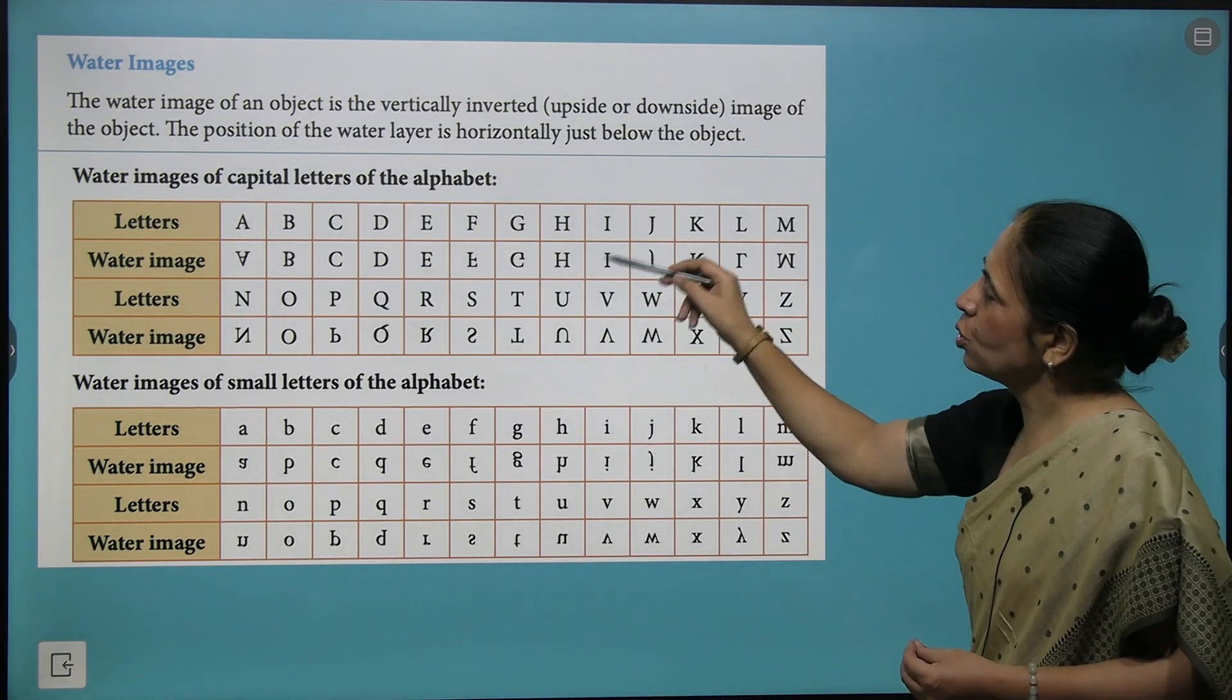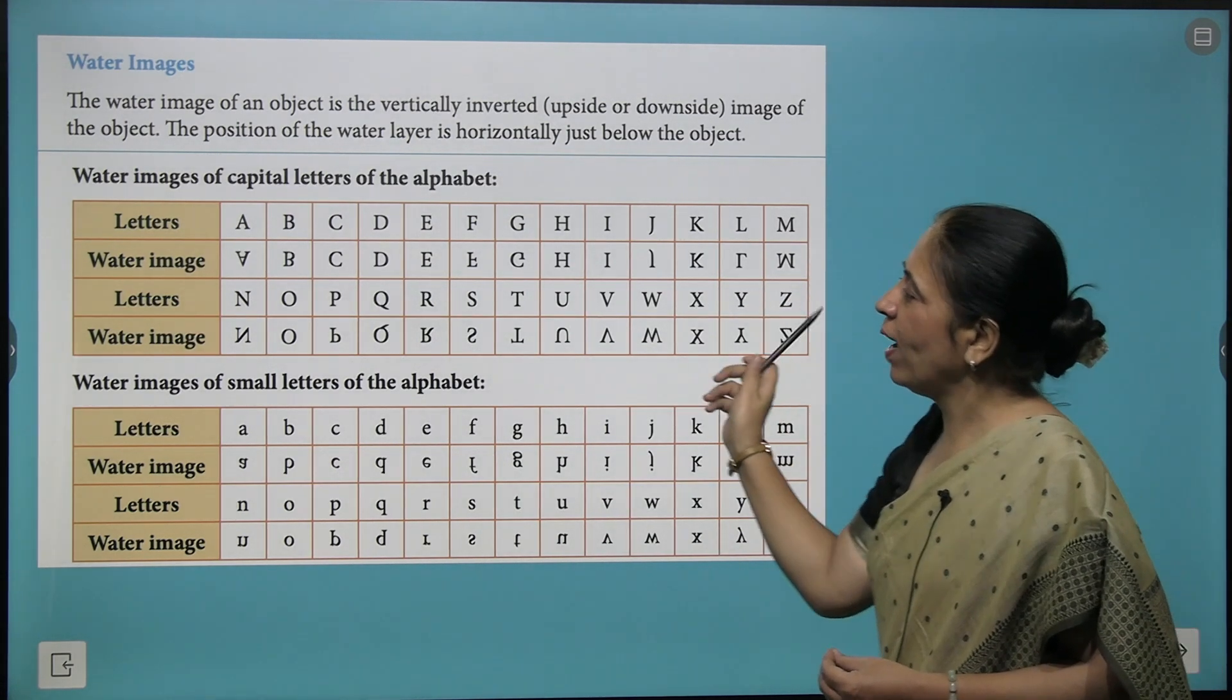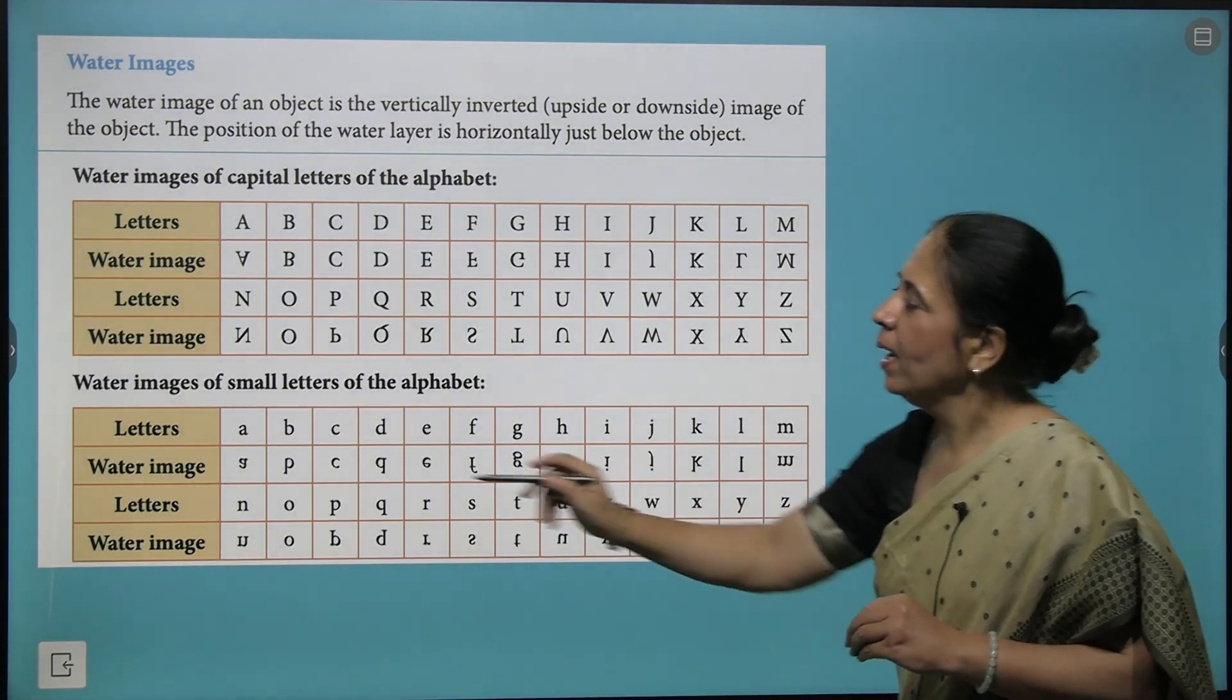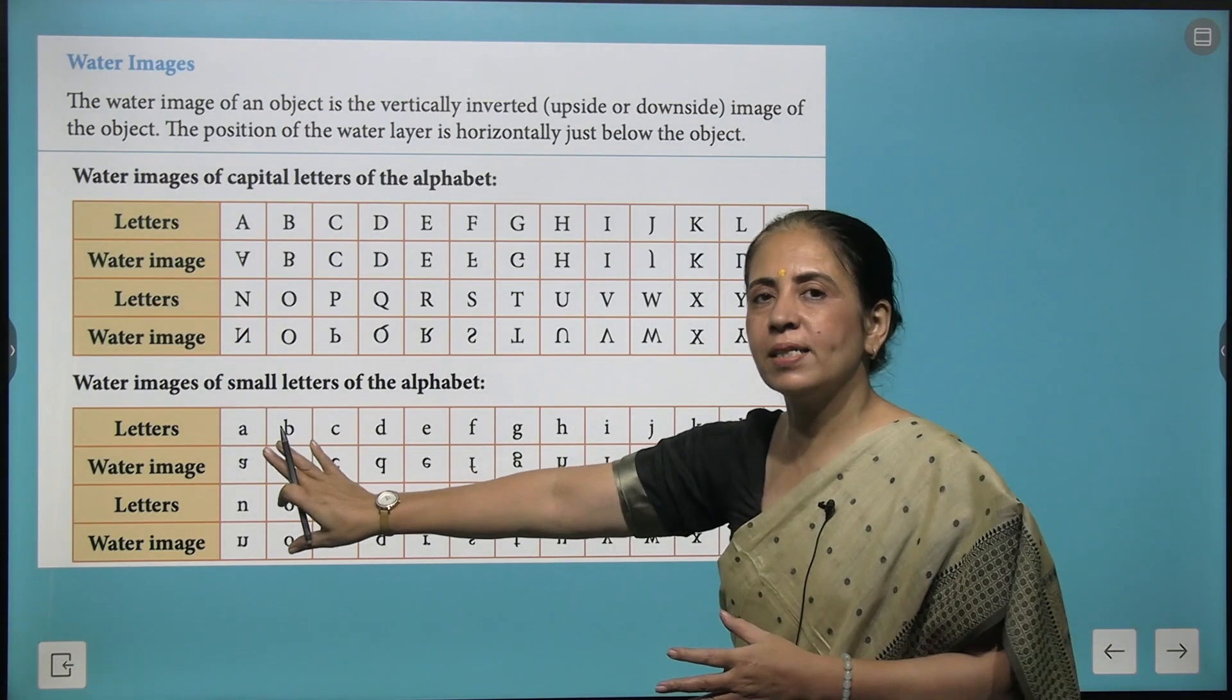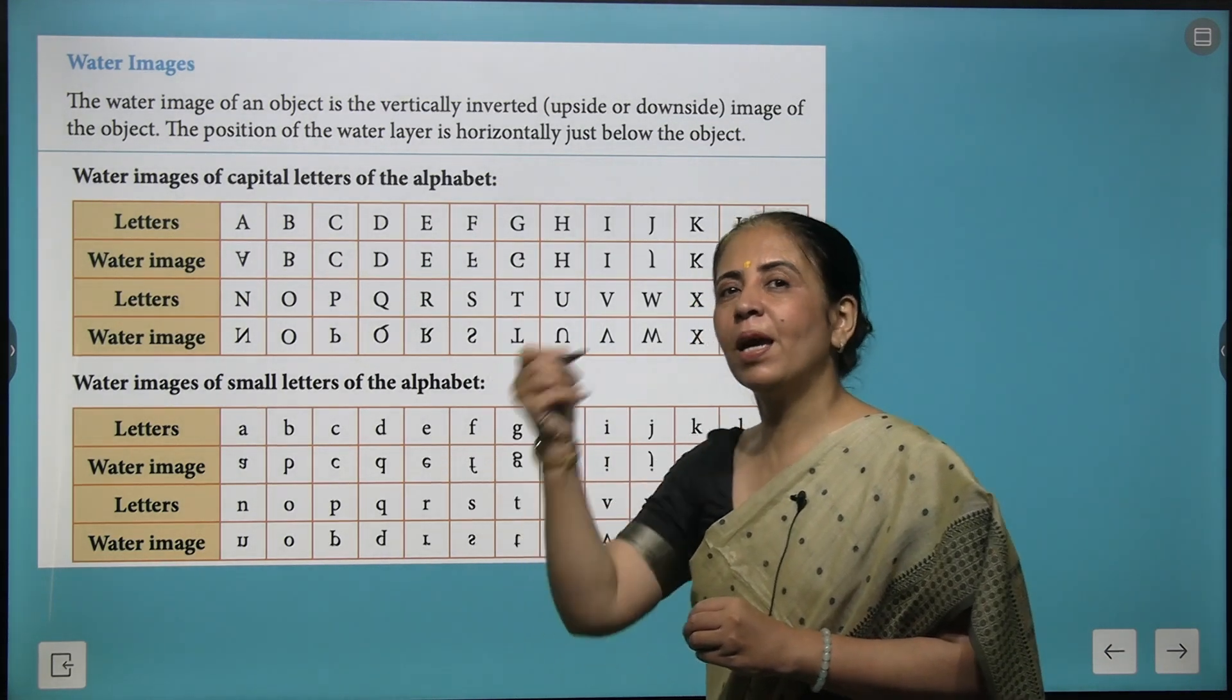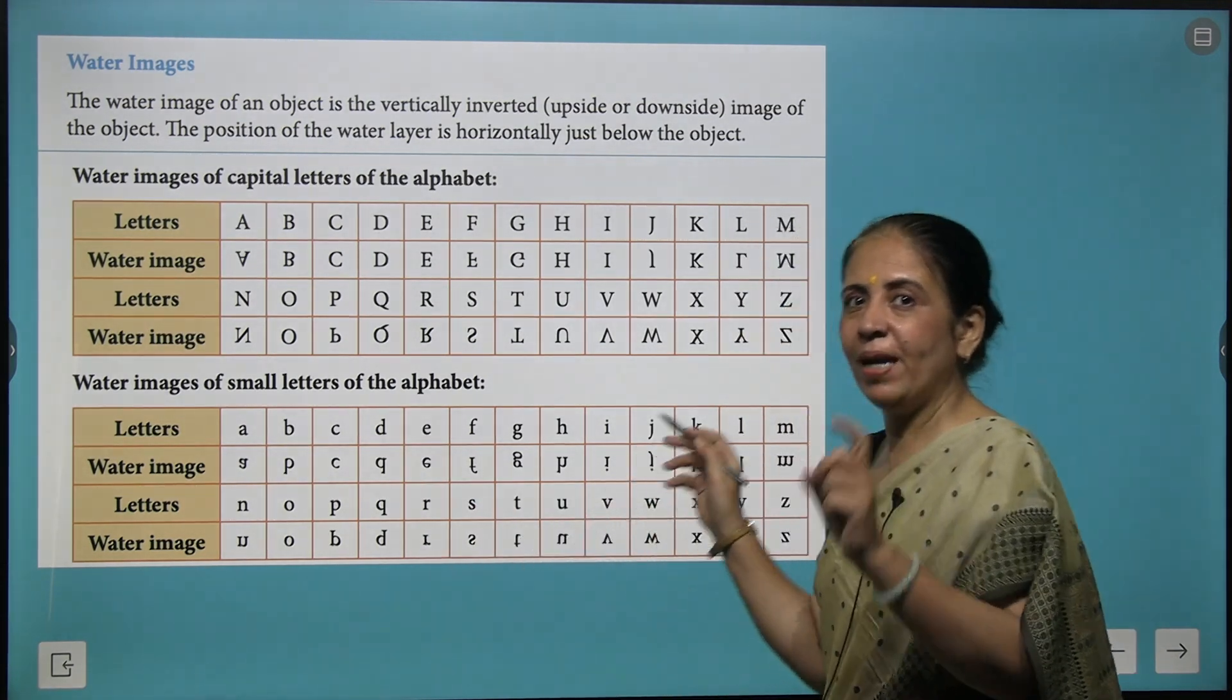So here H is also there, I, K. Then we could say X is there. So we have to just remember which of the alphabets have exactly same water images as well. And then I have given you the entire list of lowercase alphabets with their water images. So just hold a pencil in your hand and try making water images and mirror images of different alphabets and different numbers. It's a fun-filled activity believe me.